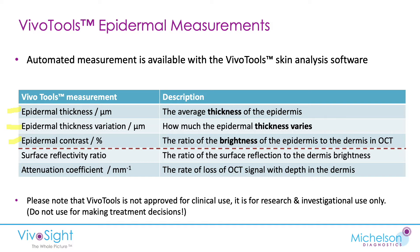We also have two measures that relate to the dermis: the surface reflectivity ratio, which is the ratio of the top surface reflection to the brightness of the dermis; and the attenuation coefficient, which is the rate of loss of the OCT signal with depth in the dermis. In this talk, I'm just going to concentrate on the first three epidermal parameters.